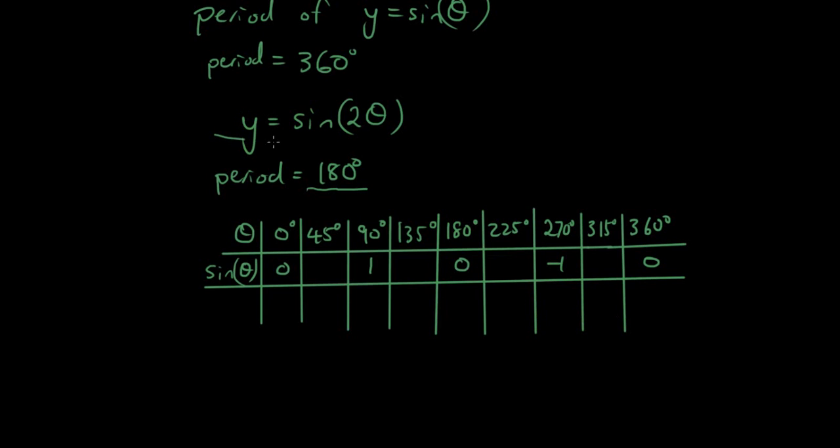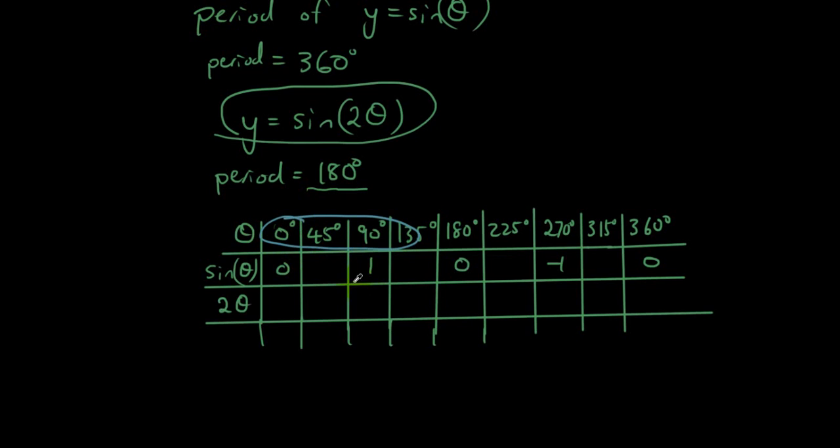But what we have done in the second function, the new function, is we have firstly doubled theta. So whatever theta is at the top, in the top row, whatever theta is over here, we're doubling it and putting it in here. And then we put this, whatever these numbers are, we then put it into the sine function as the input.